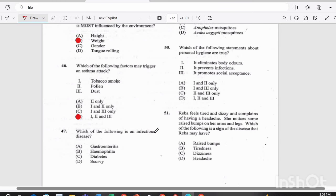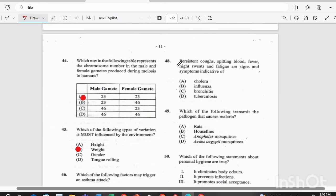Question 47. Which of the following is an infectious disease? And an infectious disease means one that is contagious, meaning you can pass it on to another person. A, is it gastroenteritis, B, hemophilia, C, diabetes, or D, scurvy? The answer there is A, gastroenteritis.